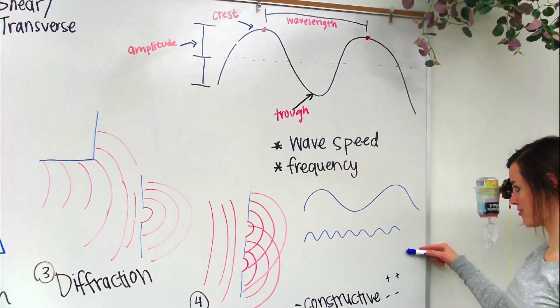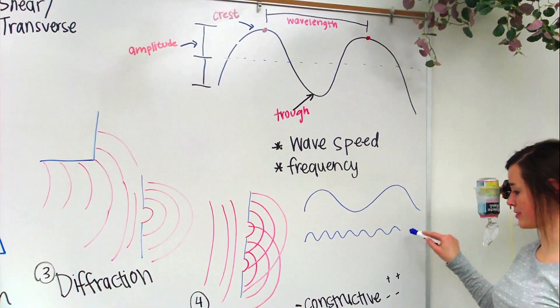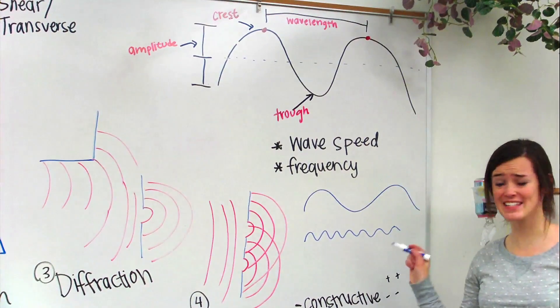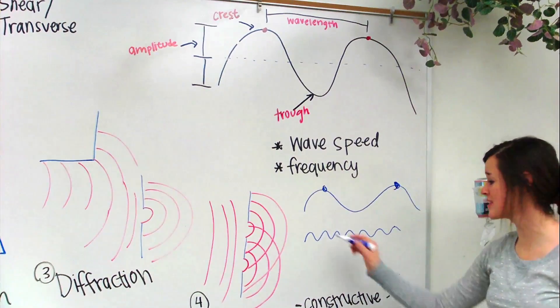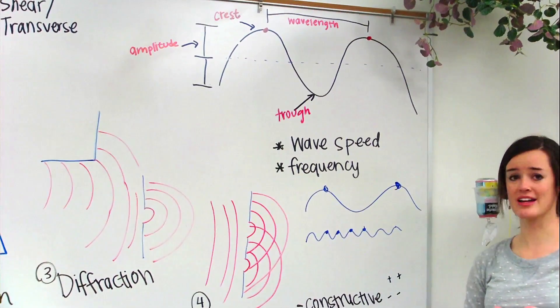And here we have a lot smaller wavelength. But, we're going to have a lot higher frequency with this. Even though they're traveling at the exact same speed, these crests are going to pass a lot less often than these guys. You're going to get a lot more frequency on here.